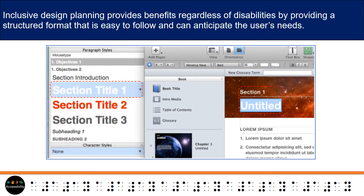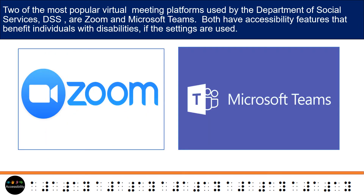Inclusive design planning provides benefits regardless of disabilities by providing a structured format that is easy to follow and can anticipate the user's needs. Two of the most popular virtual meeting platforms used by the Department of Social Services, DSS, are Zoom and Microsoft Teams. Both have accessibility features that benefit individuals with disabilities, if the settings are used.